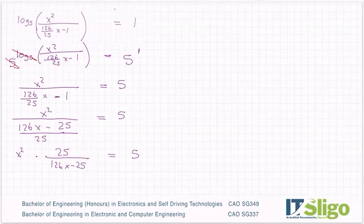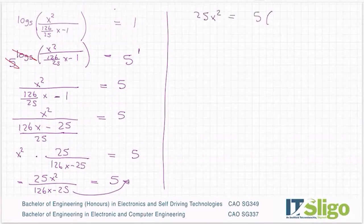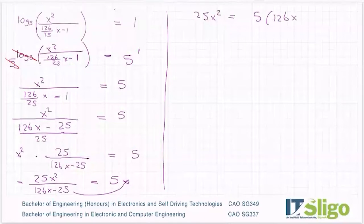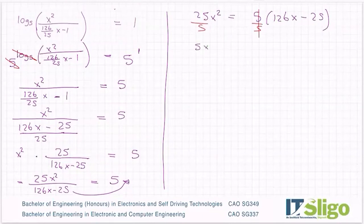So we have 25 by X squared, so top by top, that's how you multiply fractions, bottom by bottom. I'm going to bring him up so that I get 25X squared being equal to 5 times 126X minus 25. Actually going to divide across by 5 just to make the maths easier. That's 5X squared equals 126X minus 25. Can you see we have a quadratic?